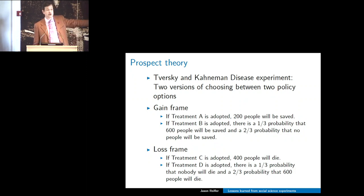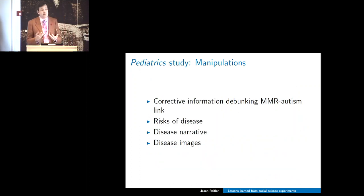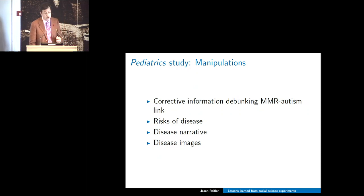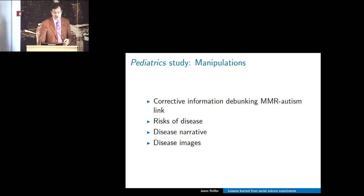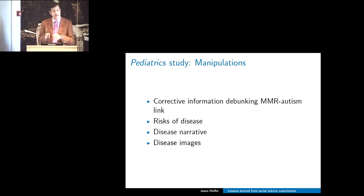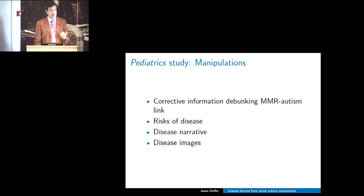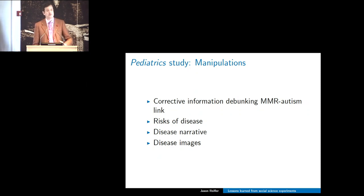The underlying idea is that when we're in the domain of losses, people become more risk-accepting and choose the riskier, uncertain option. This influenced the manipulations we chose for our pediatrics study. We had five conditions: a control condition, and four manipulations. One was corrective information debunking the MMR-autism link. Then we had three different manipulations trying to put people in the domain of losses to see if that affected preferences over vaccination: text from the CDC about the risks of disease, a disease narrative about the dangers of getting a disease with a high fever, and disease images—pictures of measles, mumps, or rubella.